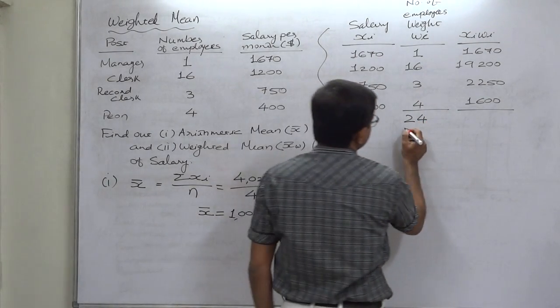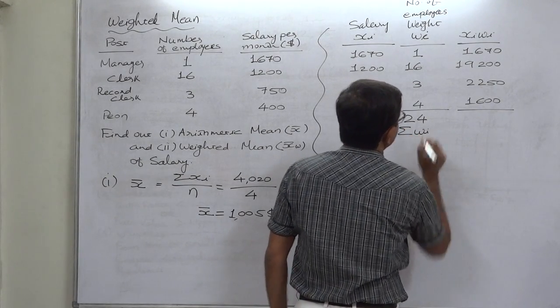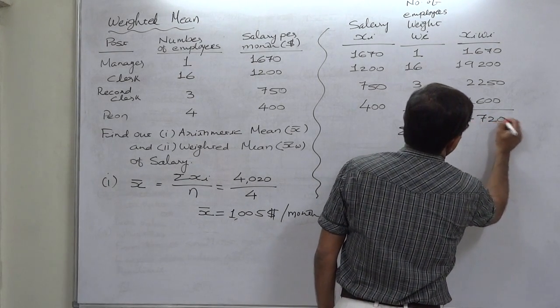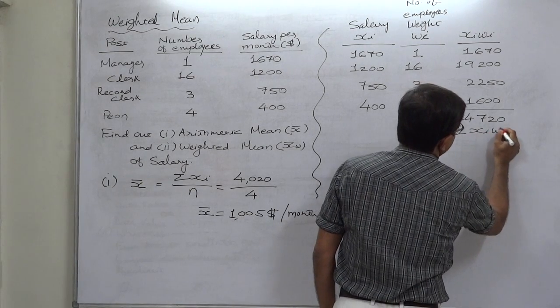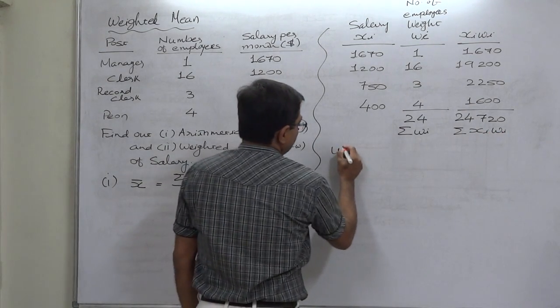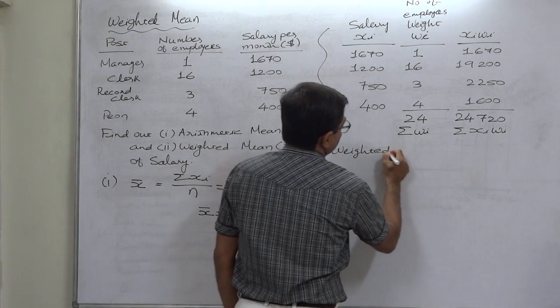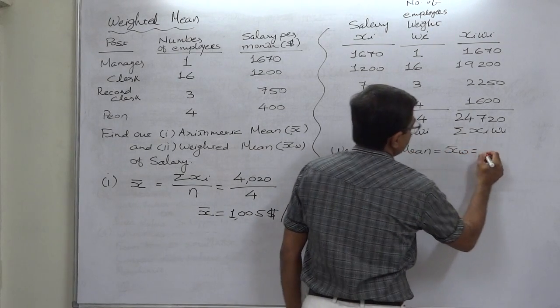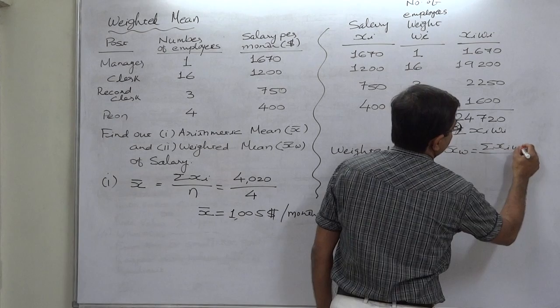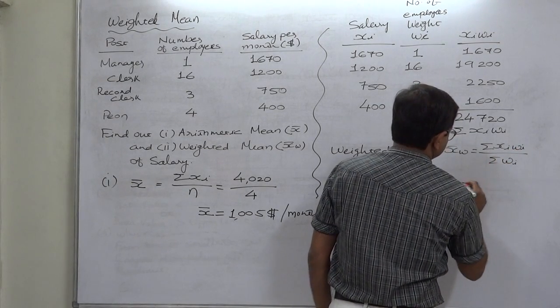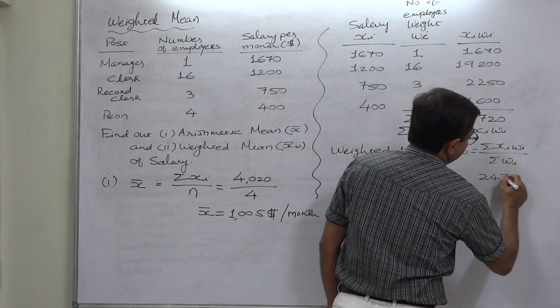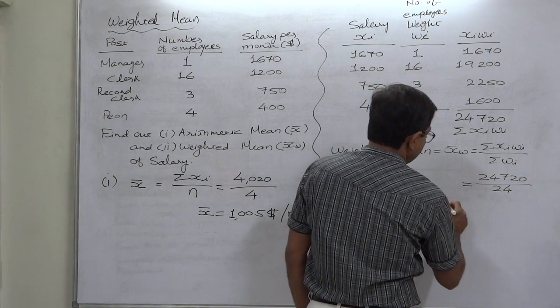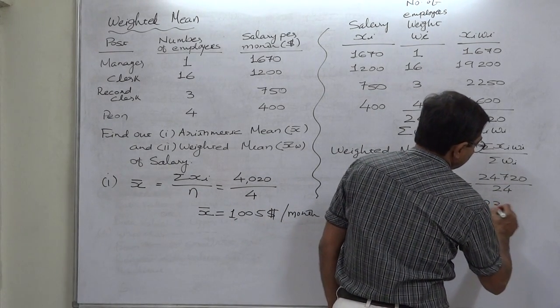We do not require to sum this column. 24, that is total number of employees in the office. The sign is Sigma W. 24,720, it is Sigma XW. What is the weighted mean? Sigma XW divided by Sigma W.